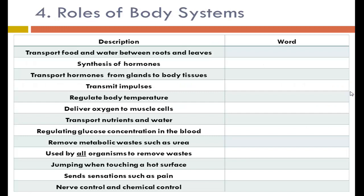The next question asks you to match descriptions to the different roles of body systems. Transporting food and water between roots and leaves is the function of vascular tissue in plants. Synthesis of hormones is the endocrine system. To transport those hormones from the glands where they are made to the body tissues, we use the circulatory system.